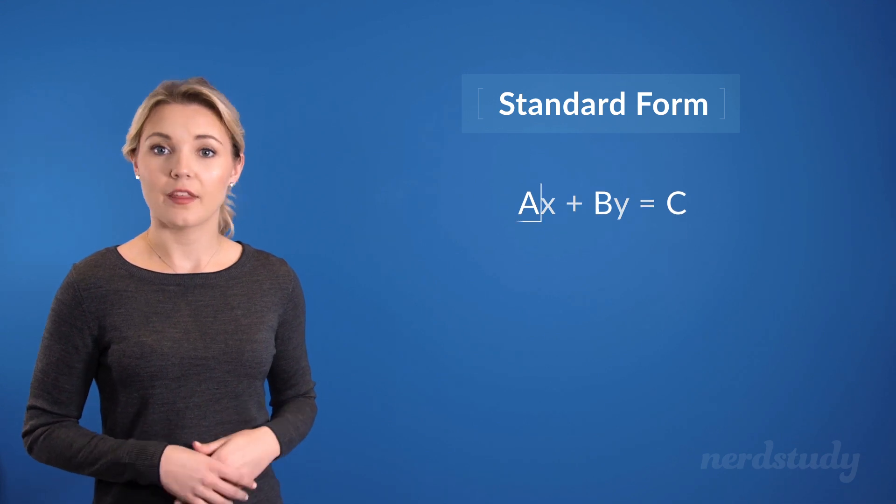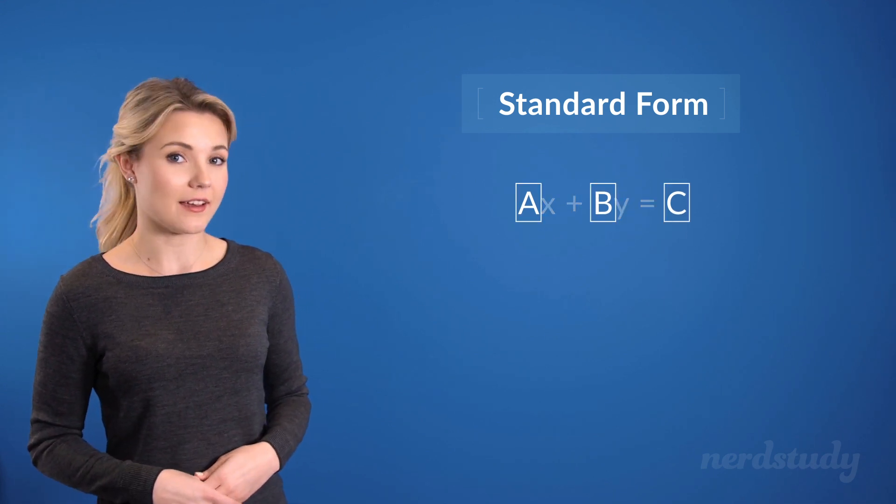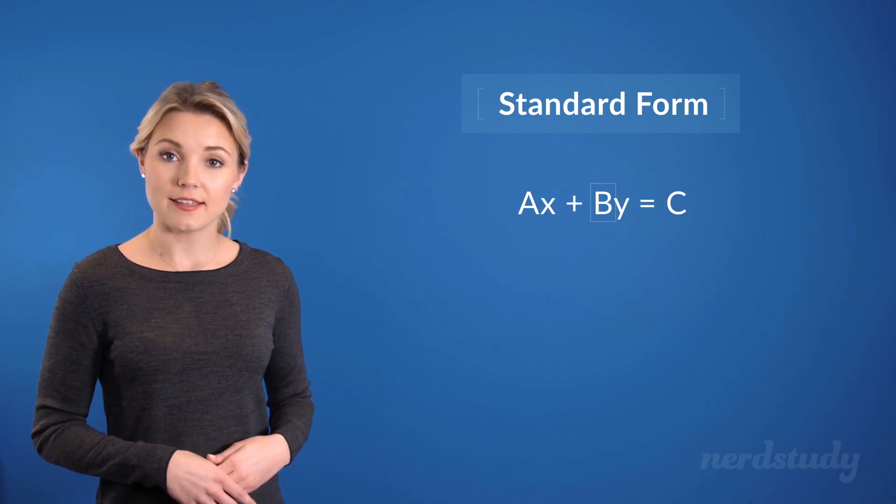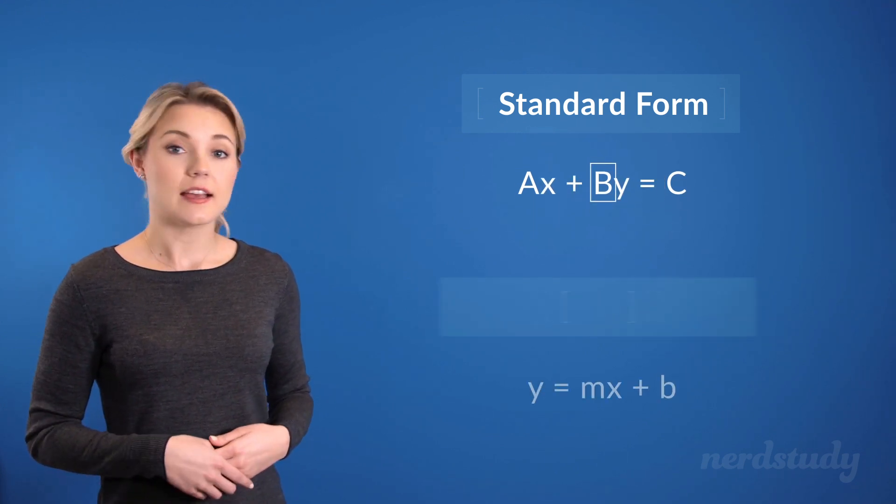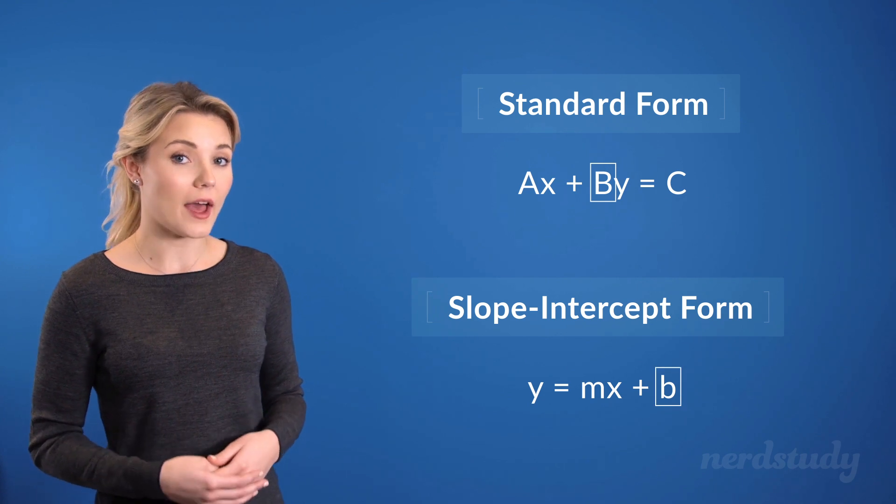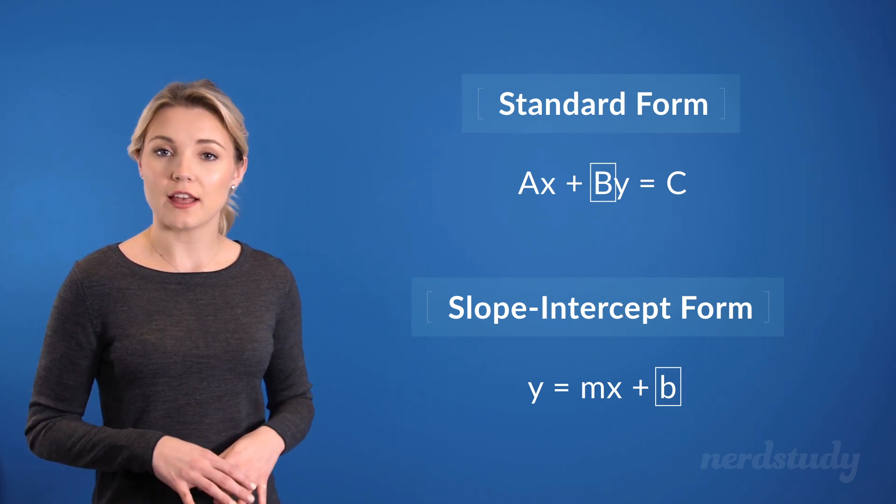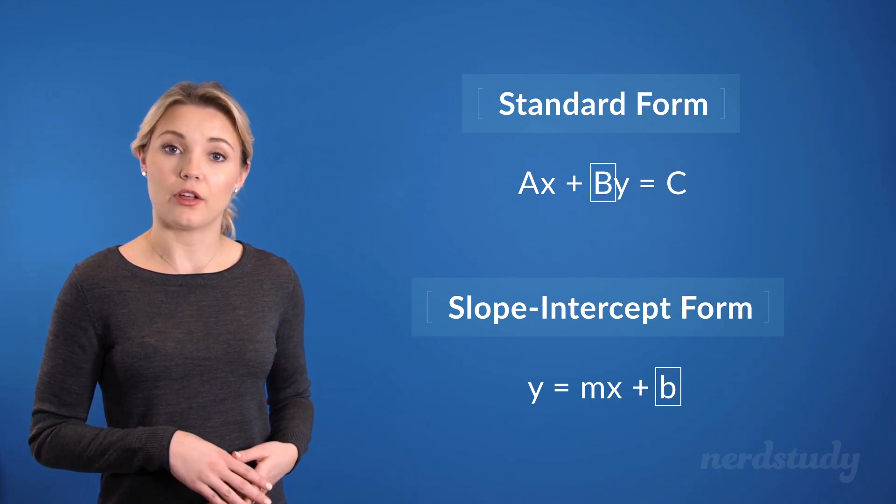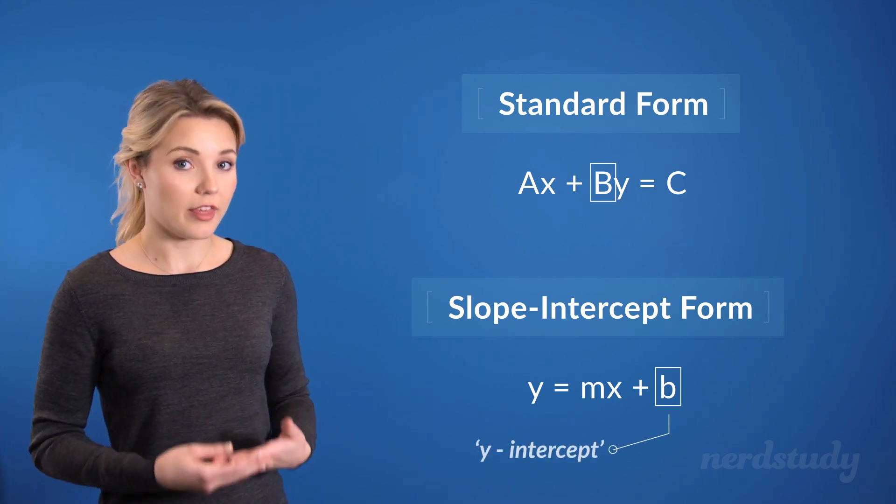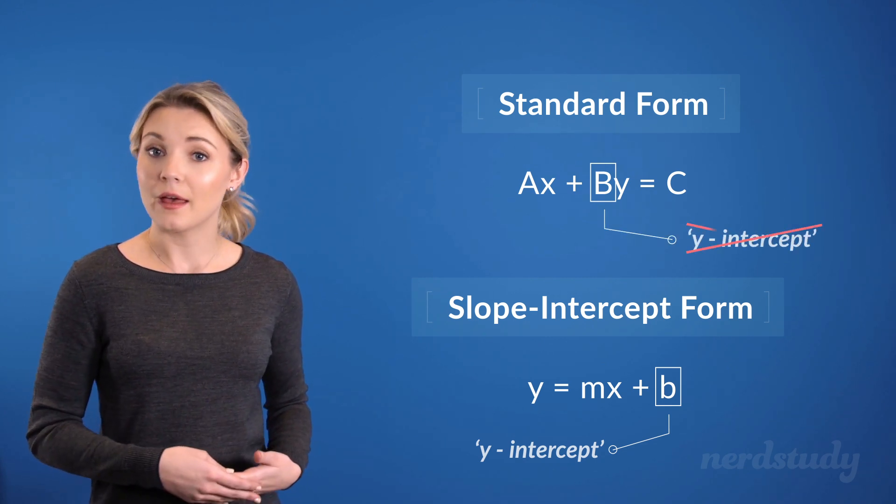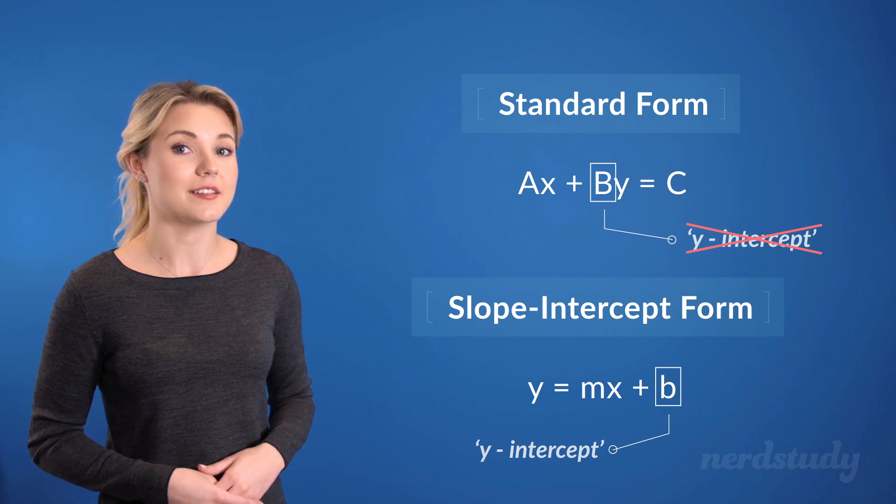In this form, the A, B, and C are capital letters that represent real numbers. This capital B here is not the same as the small y-intercept b in the slope-intercept form. The y-intercept can be found by looking for the small b within the slope-intercept form, but you can't expect to find the y-intercept by looking at the capital B in the standard form.